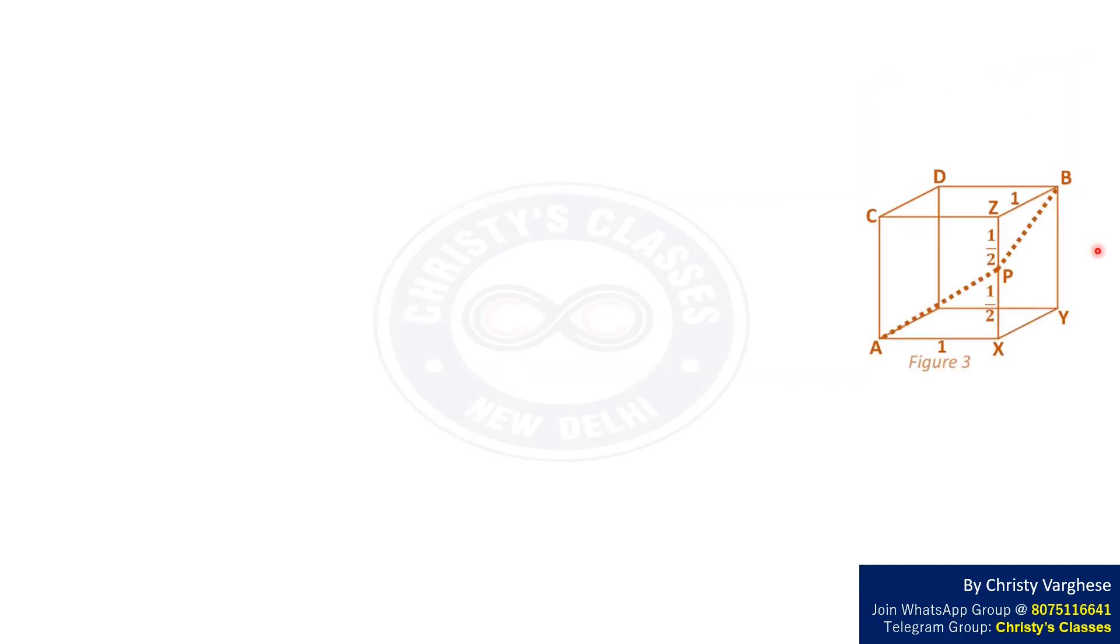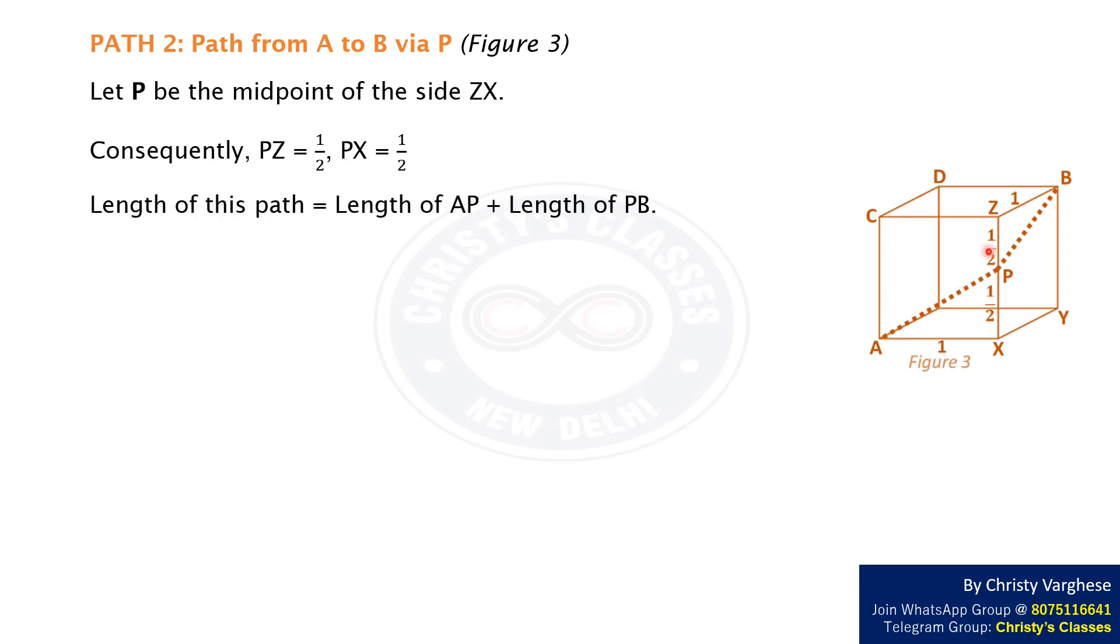Path 2 is from A to B via P as shown in figure 3. Let P be the midpoint of side ZX. Consequently PZ equals 1/2 and PX equals 1/2. Length of this path equals length of AP plus length of PB. Thus we have to find the lengths of AP and PB.